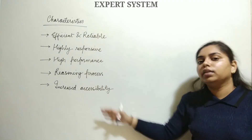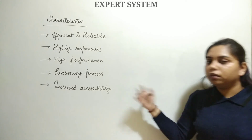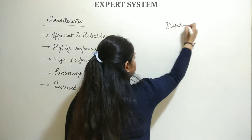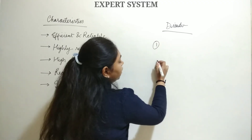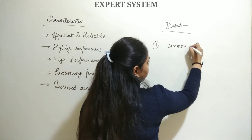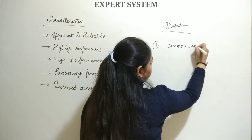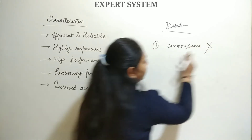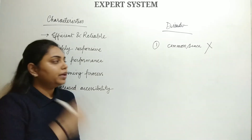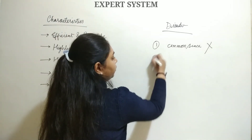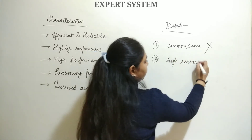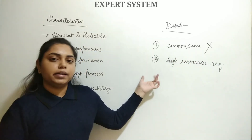Now for the disadvantages of expert systems. First, they lack common sense knowledge — recall that knowledge is of two types, but expert systems only handle domain specific knowledge, not common sense knowledge. Second, they have high resource requirements. These are the two main disadvantages.